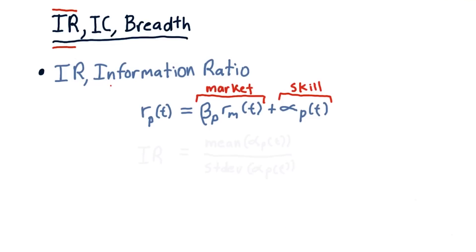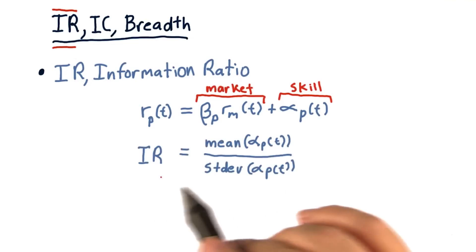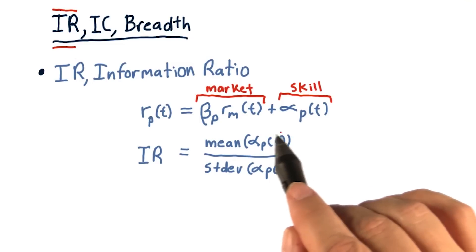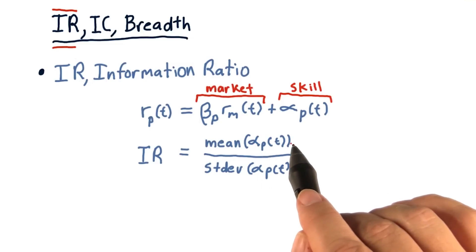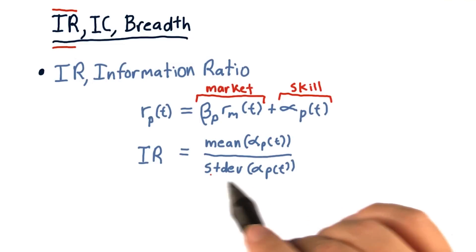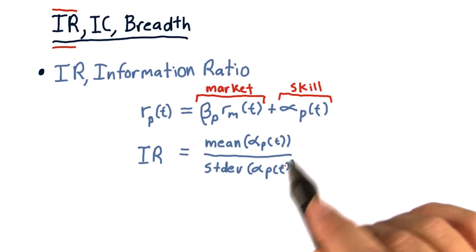It works like this. So the information ratio is the mean of all of the alpha components divided by the standard deviation of the alpha components.